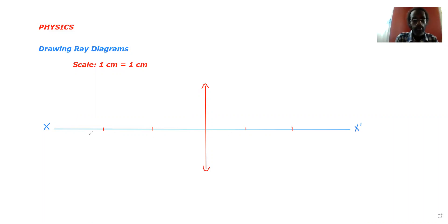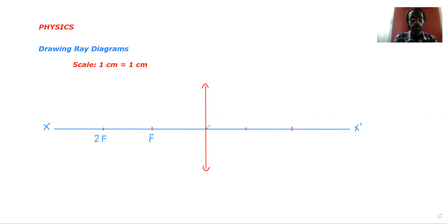Just a small mark to indicate where those points are, and then you're going to annotate or label them. This is 2f — twice the focal length — and this is f, which is the focal point. The distance from the lens to f is the focal length. Likewise on the other side you have f prime and 2f prime.